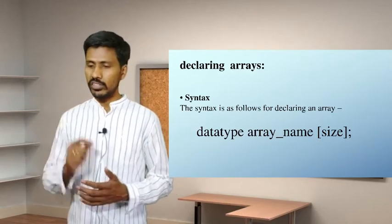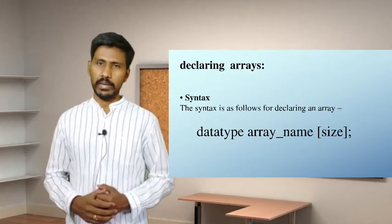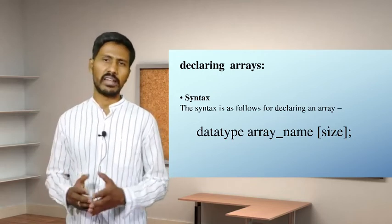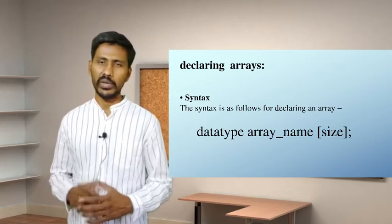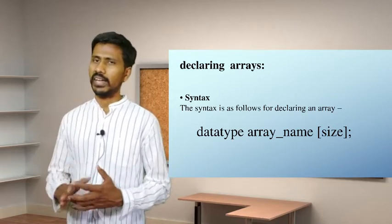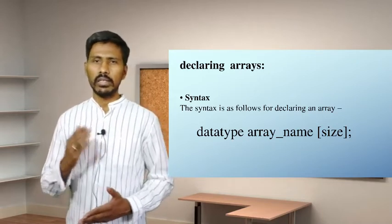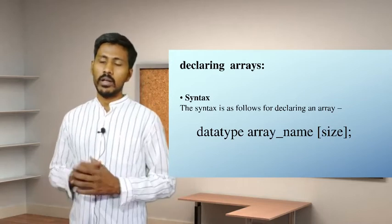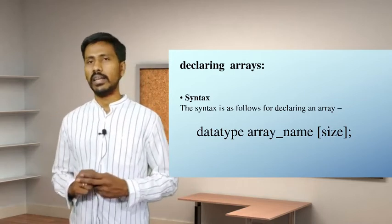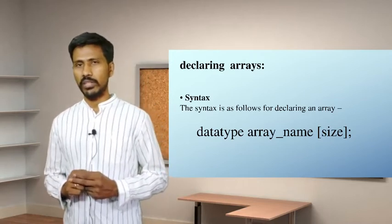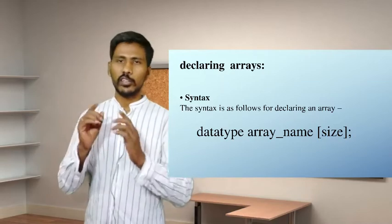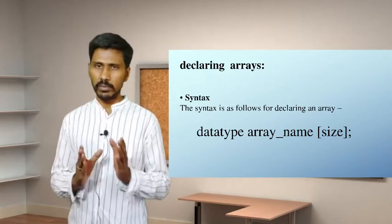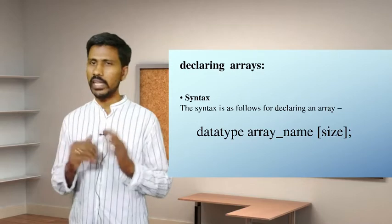We will declare the array using a single syntax. If you see this syntax, there is a data type first. You can use integer, float, double float, or long int — all data types are available. Next, there is an array name in the syntax. You have flexibility to give any array name.